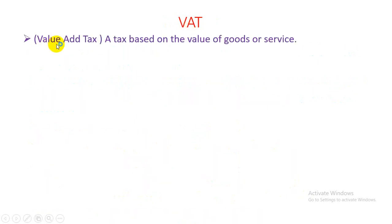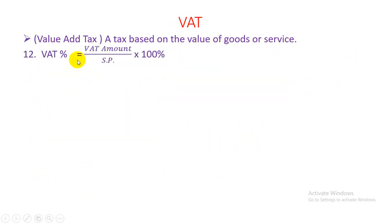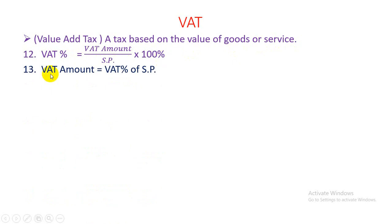VAT (Value Added Tax): a tax based on the value of goods or services. VAT% = (VAT amount / SP) × 100%. VAT amount = VAT% of SP.